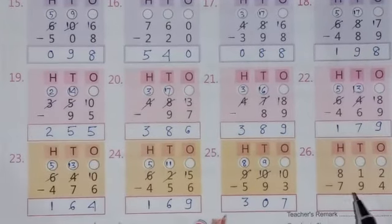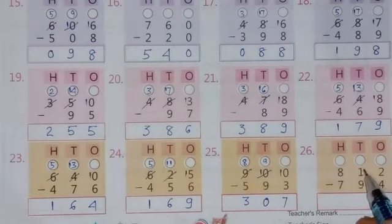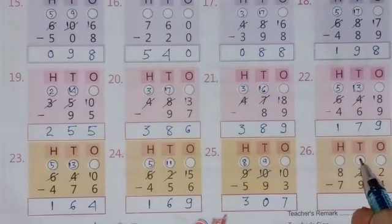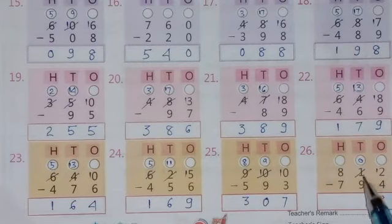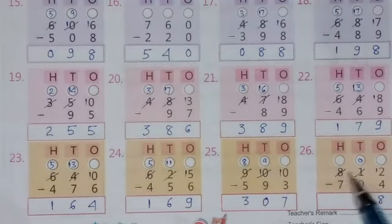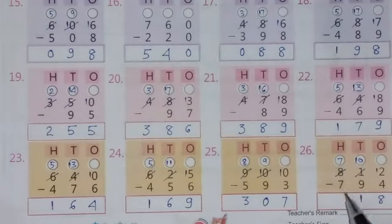The last question: 2 minus 4 is not possible, so borrow from this digit — this will become 0 and here will be 12. Now 12 minus 4 equals 8. Then 0 minus 9 is not possible, so borrow from this digit — this will become 7 and here will be 10. Now 10 minus 9 equals 1, and 7 minus 7 equals 0.